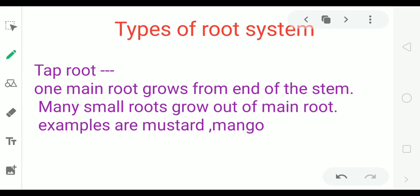In this type, one main root grows from the stem, then it has branches. Small roots grow from this main root. This type of system is called taproot system. Examples are mustard and mango.